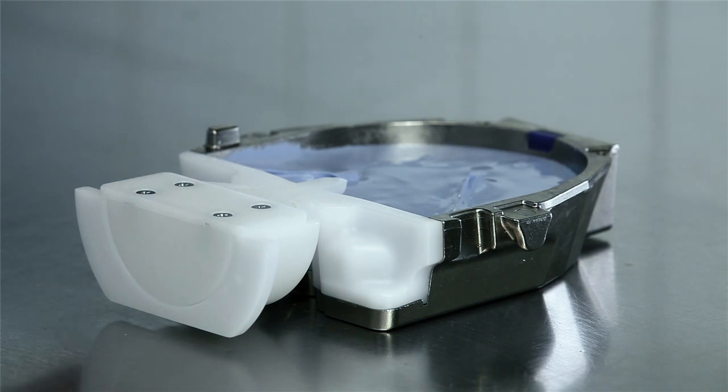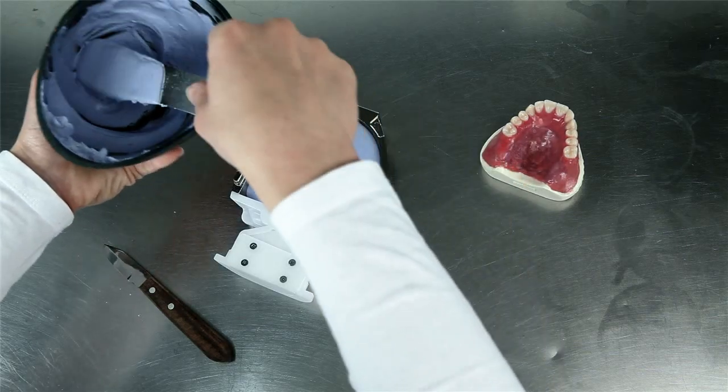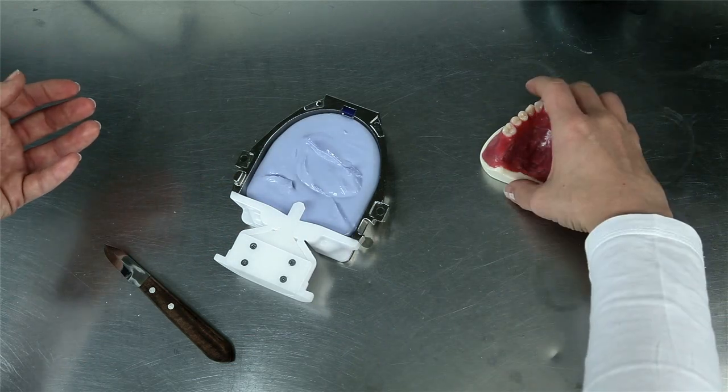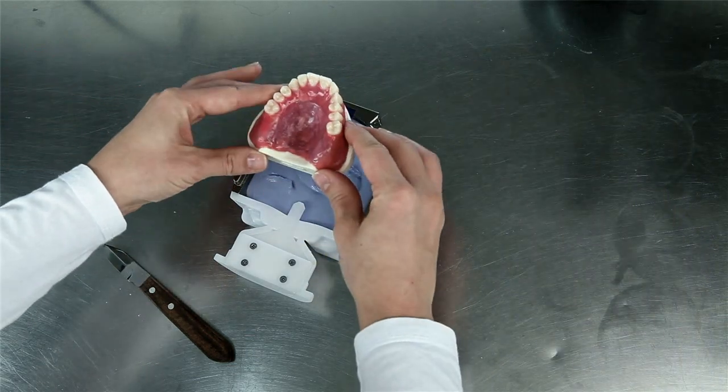You can now invest the model in stone. Use a class 3 hard stone for this. Make sure to place the model in the center of the flask.